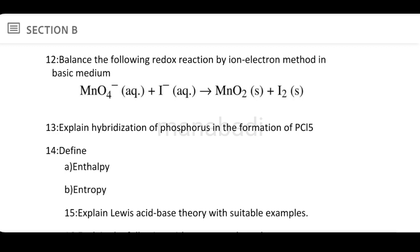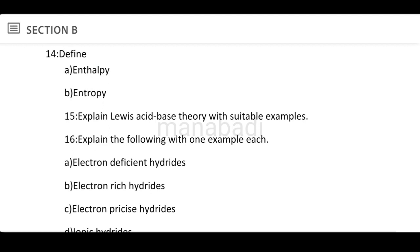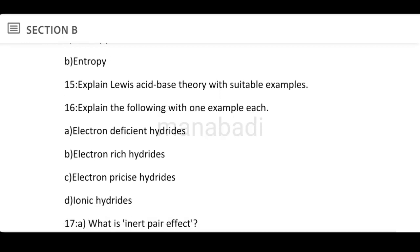Define enthalpy and entropy. Enthalpy equals internal energy plus the product of pressure and volume. Entropy is a measure of the randomness of a substance — both are simple definitions. Next: Explain Lewis acid-base theory with suitable examples. Explain electron-deficient hydrides, electron-rich hydrides, electron-precise hydrides, and ionic hydrides with one example each.